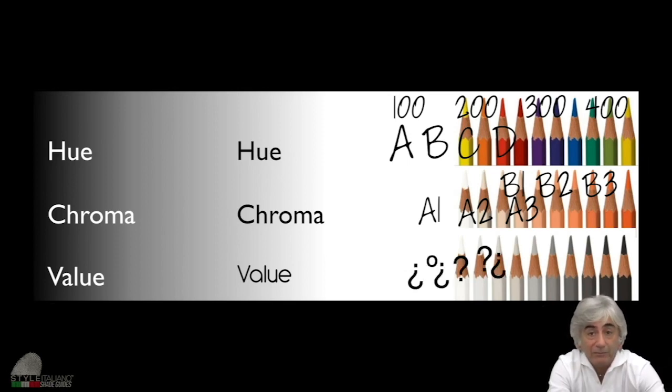What about the value? Nothing. We don't have any kind of possibility to check the value. Or better, there is a shade guide, the Vita 3D-Master shade guide, where you choose before the value. And the value is very easy to choose.